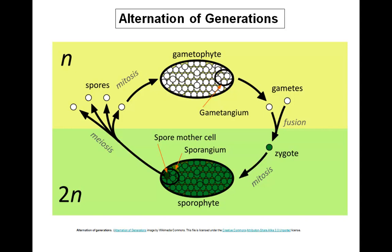Alternation of generations involves a haploid generation known as the gametophyte. The gametophyte produces haploid gametes by way of mitosis. The haploid gametes fuse — fertilization — and form the diploid zygote, which grows into the diploid generation, the sporophyte. The sporophyte produces haploid spores via meiosis. These haploid spores reproduce by mitosis and grow into the next gametophyte generation. So here we alternate between the haploid gametophyte and the diploid sporophyte generations.